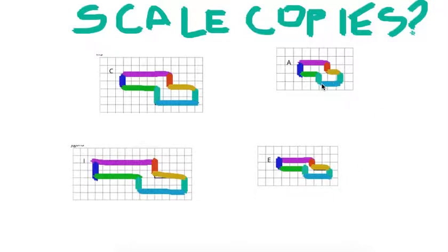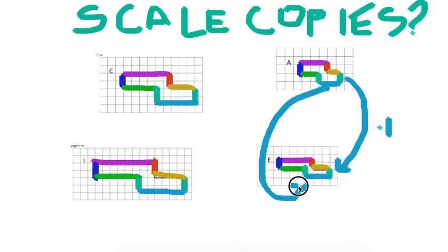But then if I came down to the light blue, that would be from two up to three, which is not times one. That would be times three halves to get up there. So since we have two different things that are being multiplied, those two could not be scale copies. So that doesn't work.